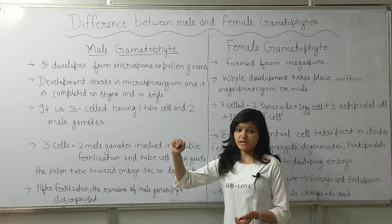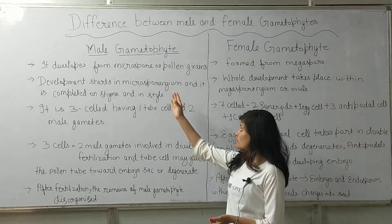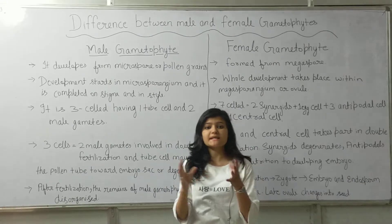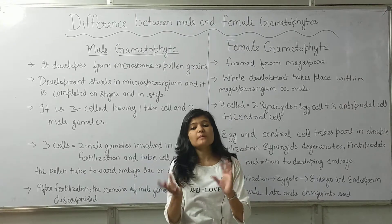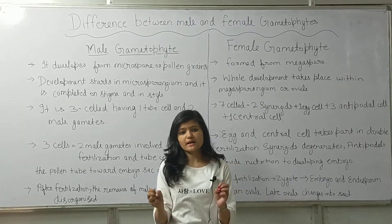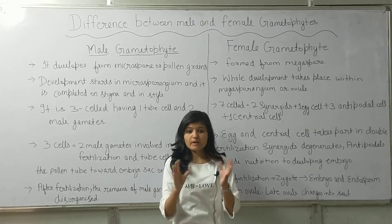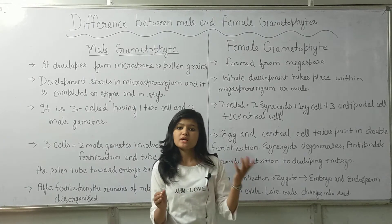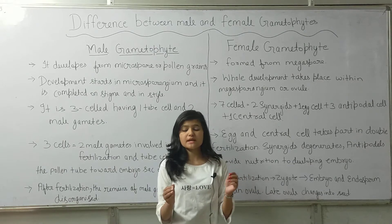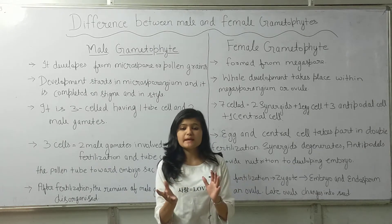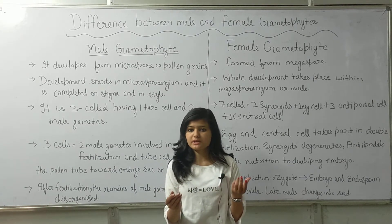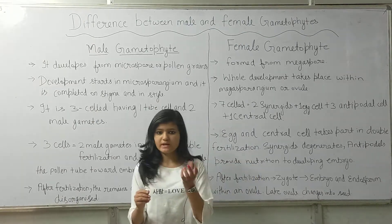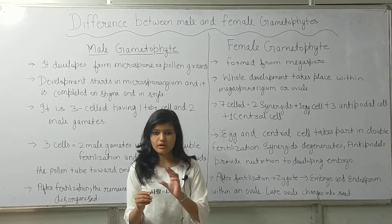The male gametophyte develops from the microspore. The gametophyte is the plant from which we have gametes — male and female gametes. The male gametophyte is the plant formed from the microspore, which is the same as the microspore.